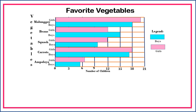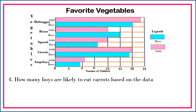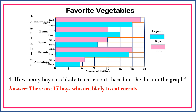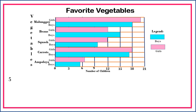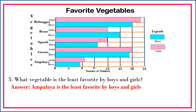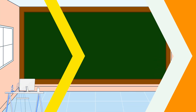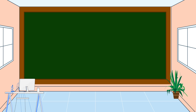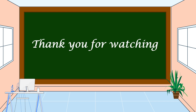Question four: how many boys are likely to eat carrots based on the data in the graph? There are 17 boys who are likely to eat carrots. Last question: what vegetable is the least favorite by both boys and girls? Ampalaya is the least favorite by boys and girls. I hope you understood our lesson for today. Thank you for watching!